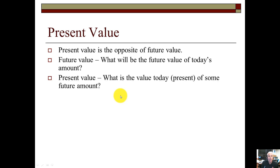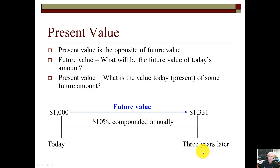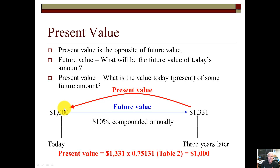Present value is the other type — and it's just the opposite of future value. Future value asks: what will today's amount be worth in the future? Present value asks: what is the value today of some future amount? On a timeline, $1,000 compounded annually at 10% grows to $1,331 three years later. Working backwards, the present value of that $1,331 — discounted at 10% for three years — would be $1,000, solved using Table 2, the present value of a single amount table.